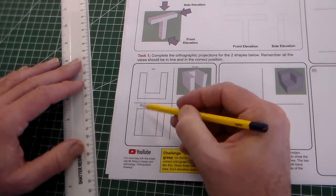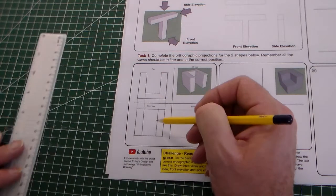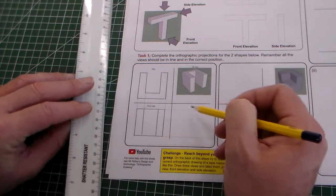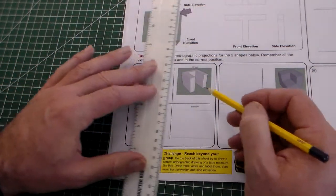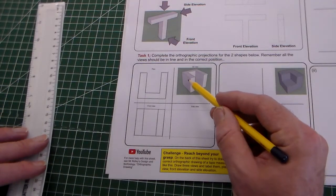Now I've got this shape, I can put these dimensions across, but obviously we need this side view here.